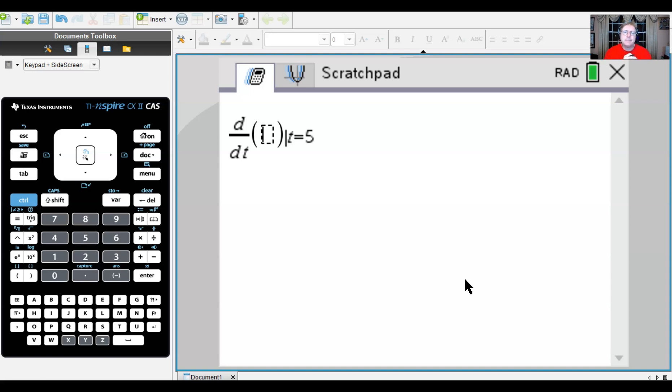Now for those of you who have a TI-84, you can get there pretty quickly if you type in math 8, that's the nDeriv command. You will essentially see this same template, you just have to enter the variable t and the value 5 on your own from that home screen, not a big deal.